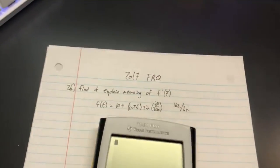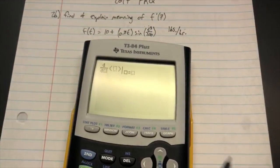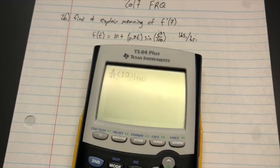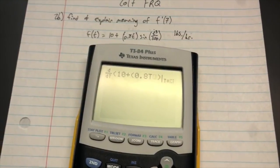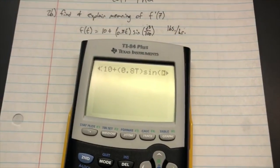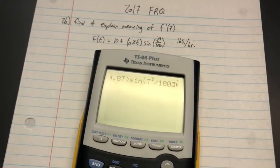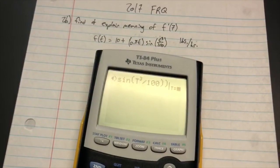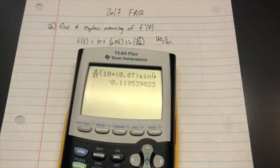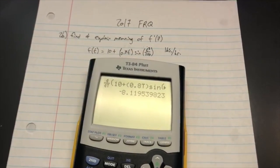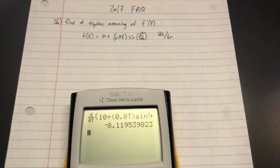To find the derivative f prime of 7, we can use the calculator with math 8. We type in our equation: 10 plus 0.8t times the sine of t cubed divided by 100, with t equals 7. We get negative 8.119.